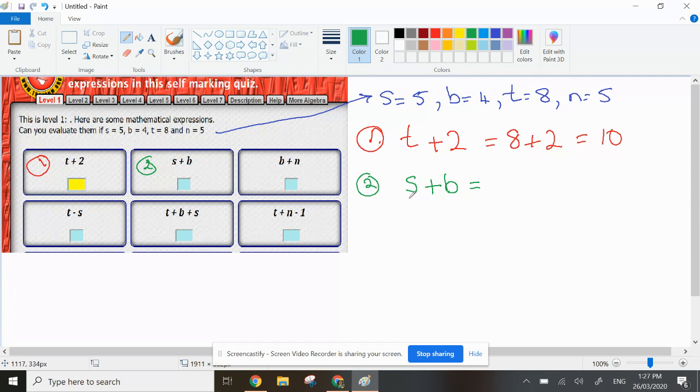So this S here is meant to have the value 5, and the B actually means in this case 4. That gives us 5 plus 4, which gives you an answer of 9. That's the value of this expression when you use these things to go into it. It's called substitution.